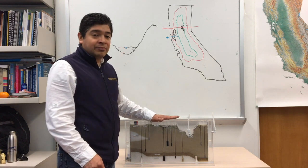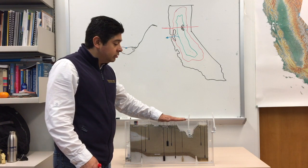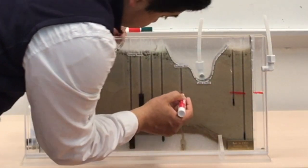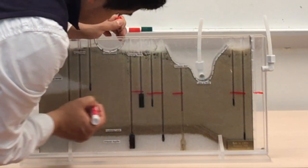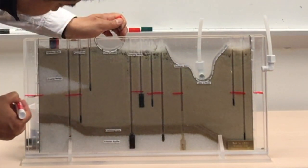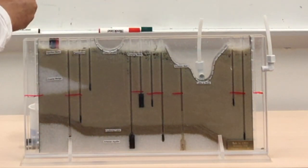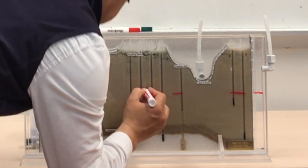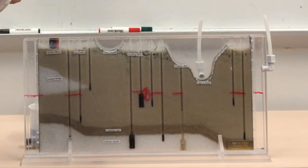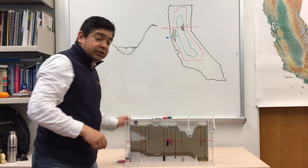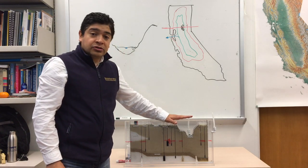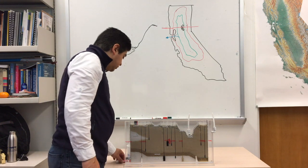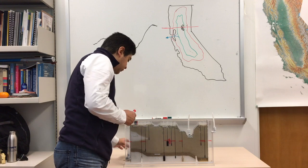Let's start with marking the water table on our model. Now for this portion I'm going to put some water here with dye so we can actually see how water moves into the ground.